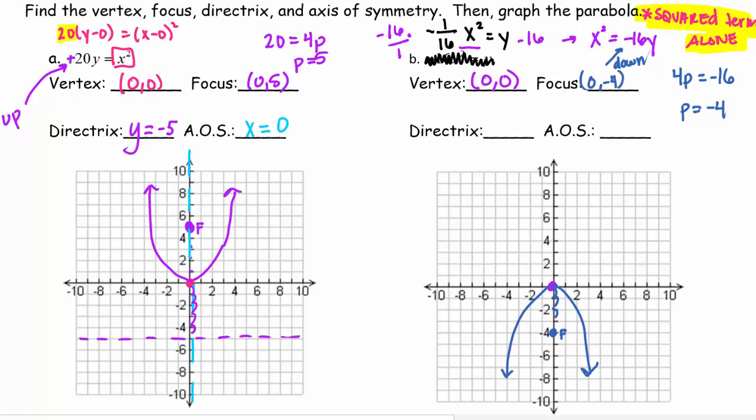Then I have my directrix, that's also 4 units away. So count in the other direction, 1, 2, 3, 4. And we have a horizontal line at y = 4. And then lastly, that axis of symmetry is where we would cut our parabola in half at x = 0. So there's two examples on how to graph. Again, make sure your squared term is alone.